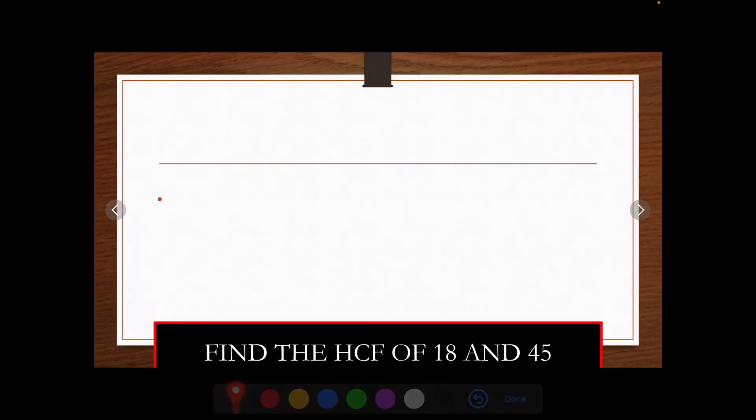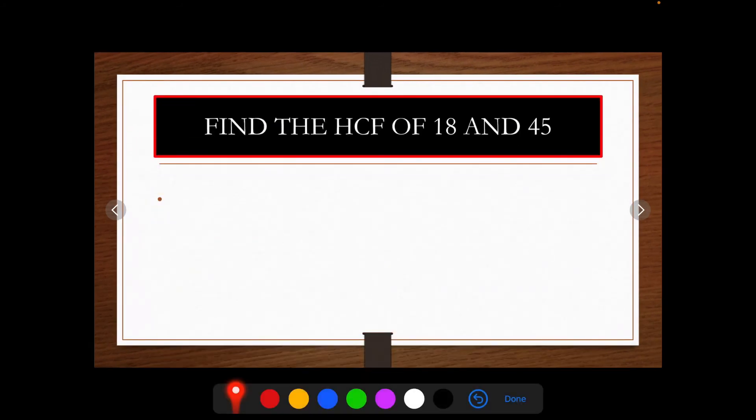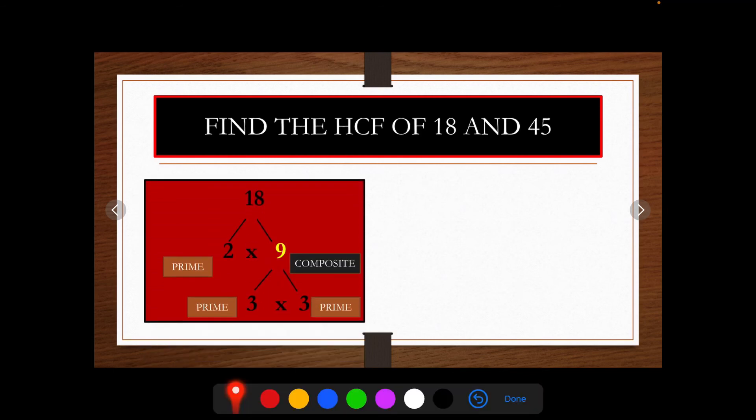Now, see another example. Find the HCF of 18 and 45. Again, choose any factor pair for 18 and 45 and find out the prime factors. So, here we get 18 as 2 times 9 equals 18. 2 is a prime number and 9 is a composite number. So, it can be factorized further as 3 times 3 equals 9.